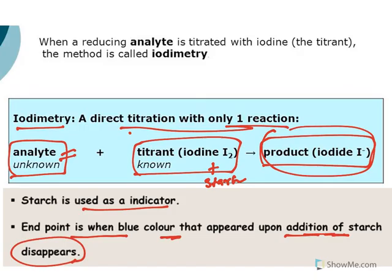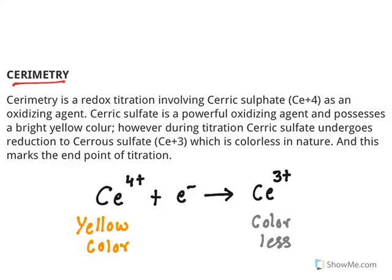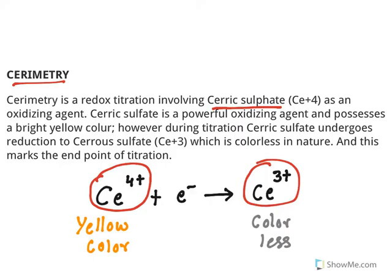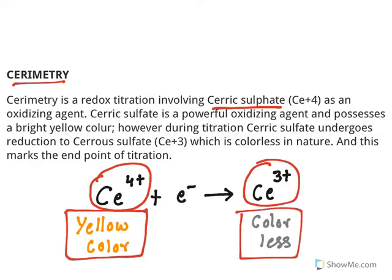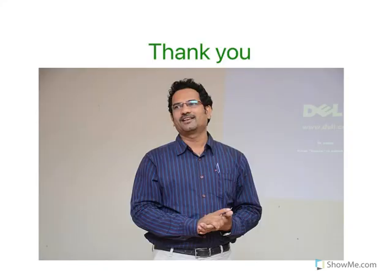The last type is cerimetry, which involves ceric sulfate. Cerium in the +4 oxidation state is converted to +3, making it an oxidizing agent. It is also a self-indicator: initially it has a yellow color which converts to colorless when the titration ends. Ceric sulfate is a powerful oxidizing agent with a bright yellow color; during titration it undergoes reduction to cerous sulfate, which is colorless, and this color change indicates the endpoint. That concludes the topic of redox titrations — do subscribe and share. Thank you.